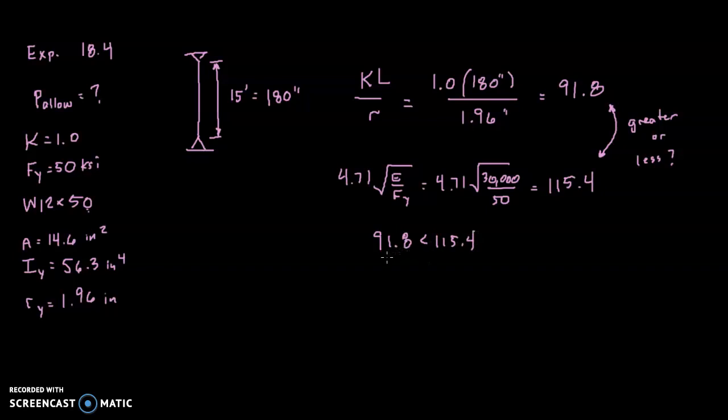91.8 is less than 115.4. So that means we have a low KL over R. This is a relatively short and stout column, which of course means we have to use the more complicated of the two equations. That's just the way it seems to be. So that equation is that the allowable load, P allowable, is equal to 0.658, that's a constant, raised up to the power of this ratio of F sub y over F sub e.